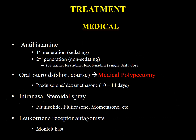Treatment: as already mentioned, ethmoidal polypi are known for their recurrence, so medical treatment should be started before surgery. Depending on extent and sinus involvement, surgery may be preferred initially, but moderate polypi are usually treated medically first. Medical treatment includes antihistamines — preferably second-generation non-sedating with daily dosage — and oral steroids. A short course of oral steroids works very effectively and is known as medical polypectomy.